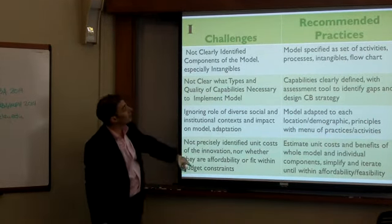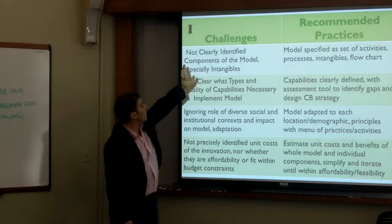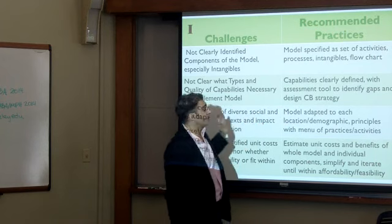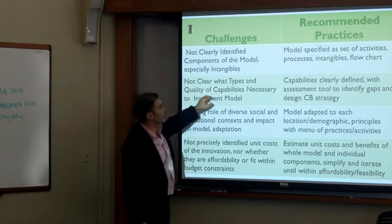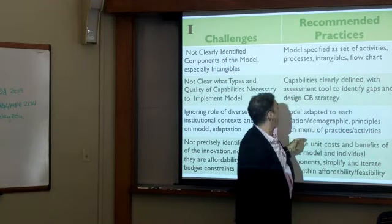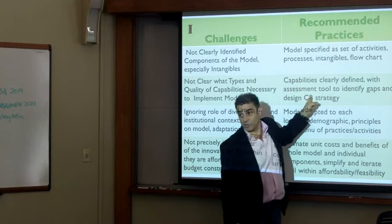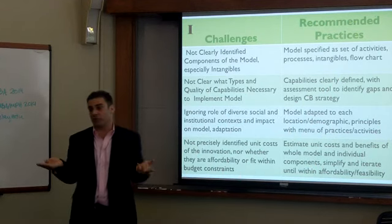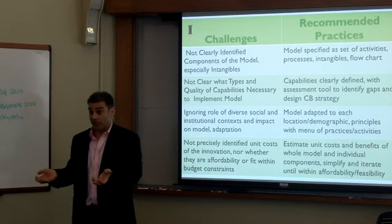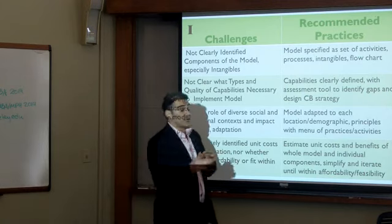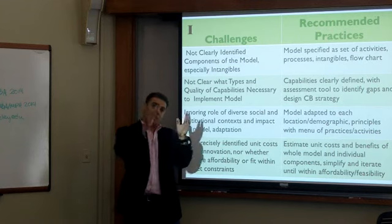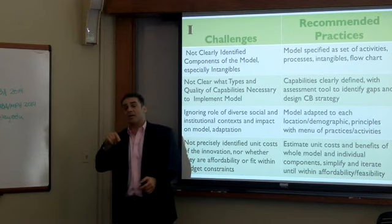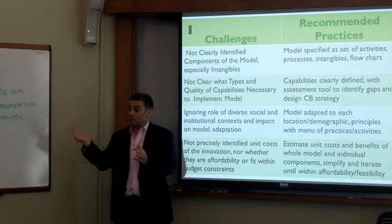The solutions to these challenges: if you don't know what the components are, do a flowchart — a logical framework of how you actually do this. If you don't know what capabilities are necessary, take the activities and ask what an organization would need to know or be able to do in order to deliver that. This gives you an assessment tool to evaluate potential partners and identify gaps, which also gives you a capability building plan. And figuring out the external environment is the hardest one — organizations don't notice it until they've moved to a new context and it doesn't work.